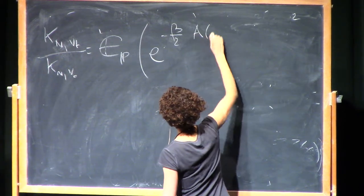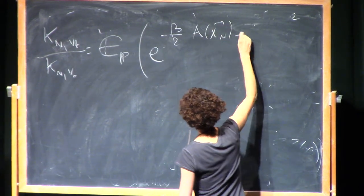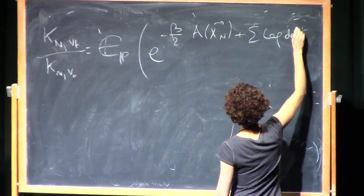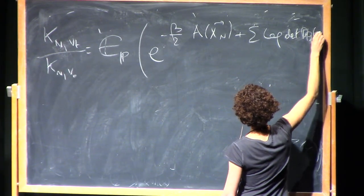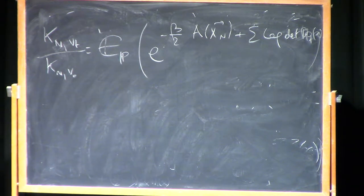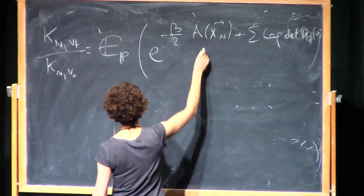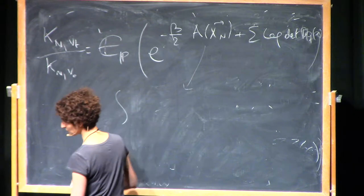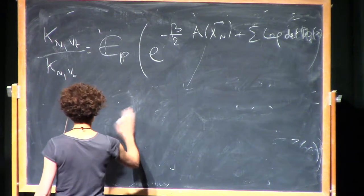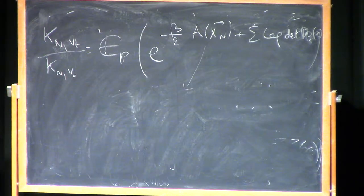This term a of xn plus sum of log of that d phi t of xi. And so now what I'm claiming is that what's inside this exponent is essentially some fluctuations. Because you see this a term is the integral of a certain... Let me retrace my steps a little bit. I want to modify this term a little bit.